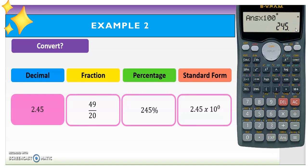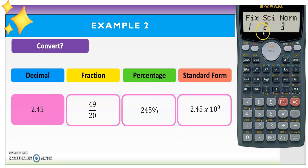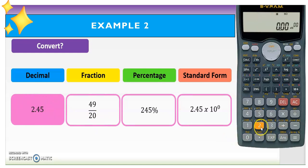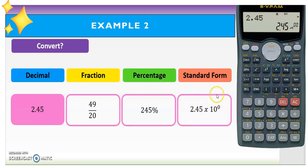To convert 2.45 to standard form using a calculator, press Mode repeatedly until you find SCI. Press the number for decimal places — here there are 3 decimal places, so press 3. Then enter 2.45 and press equal. You get 2.45 times 10 to the power of 0.